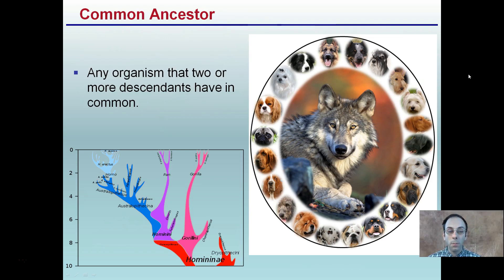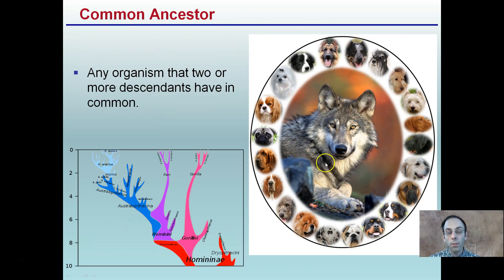A common ancestor is an important term — it's any organism that two or more descendants have in common. I'm going to tell you what the common ancestor is, and through your cutouts you'll have to determine what is more closely related and what is more distantly related to that ancestor. For example, the wolf and all the dog species derived from it all share one single common ancestor; some may be more closely related than others, but they all relate to that common ancestor.